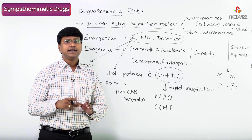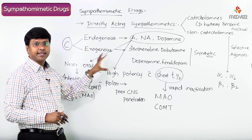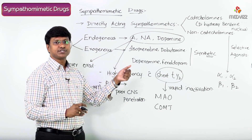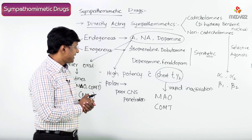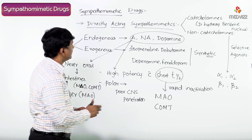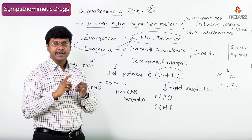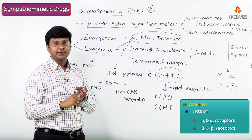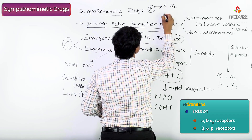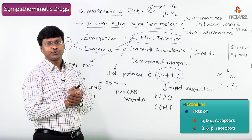Now let me discuss the actions of these catecholamines on various receptors. Adrenaline acts on alpha-1, alpha-2, beta-1, and beta-2 receptors.